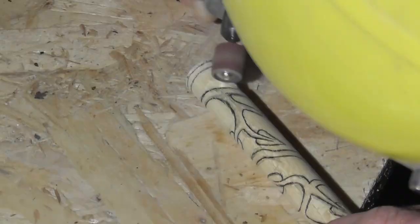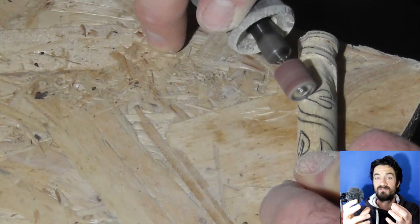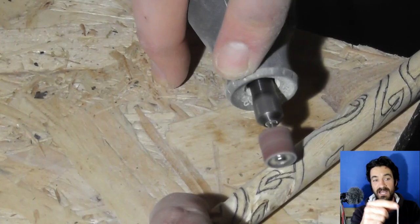Using my rotary tool, basically different varying degrees of sanding drum, so larger sanding drums to just take out most of the actual infill in between the leaves and the vines, then turning to smaller ones.